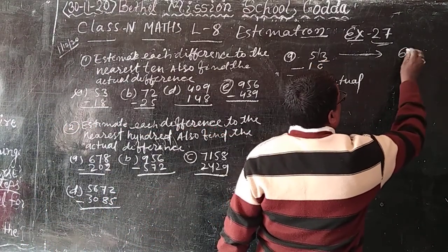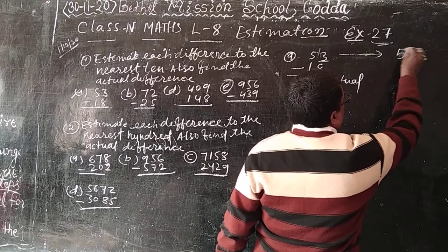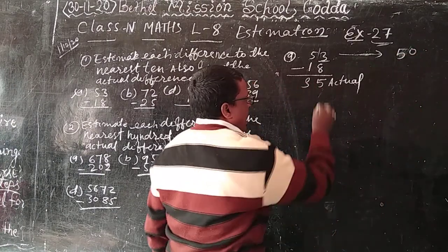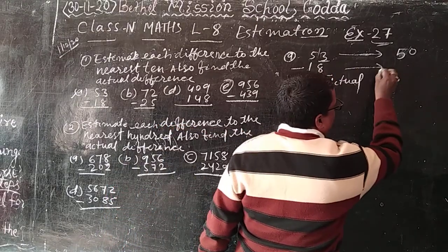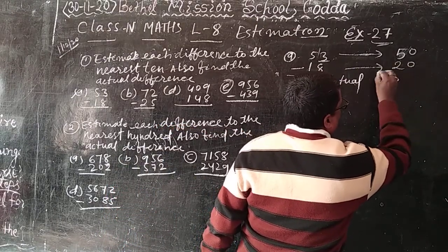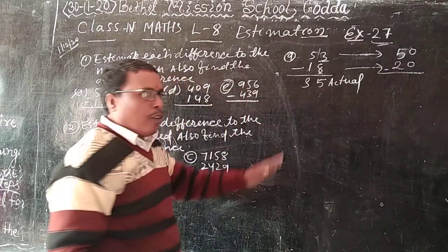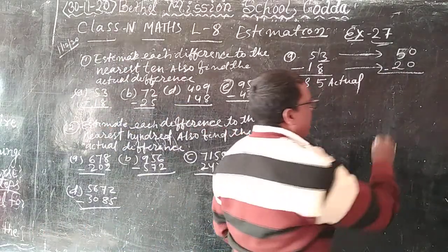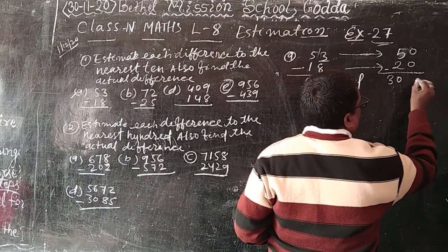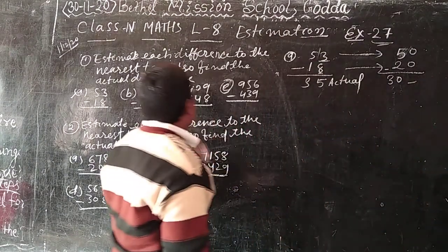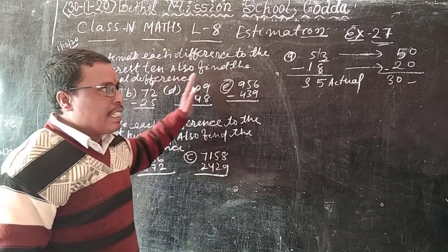So how much write? 50. And 8, 8 is more than 5. So what write? 20. 50 minus 20, how much? 30. 30 is what? Nearest 10. This is estimate.